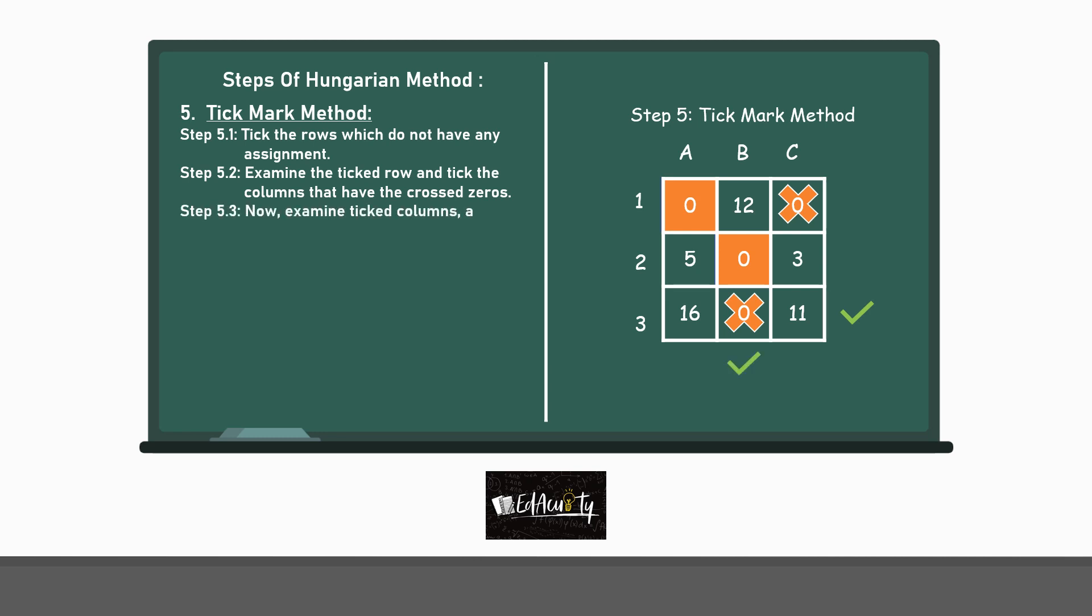Step 5.3. Now examine ticked columns and tick the rows which have any assigned 0. In column B, row 2 has an assigned 0. So, we will tick the second row. Step 5.4. Also, if there is any crossed 0 in the same row, then repeat steps 5.1 to 5.3. But in our case, there is no crossed 0 in the second row. So, we will move to the next step.